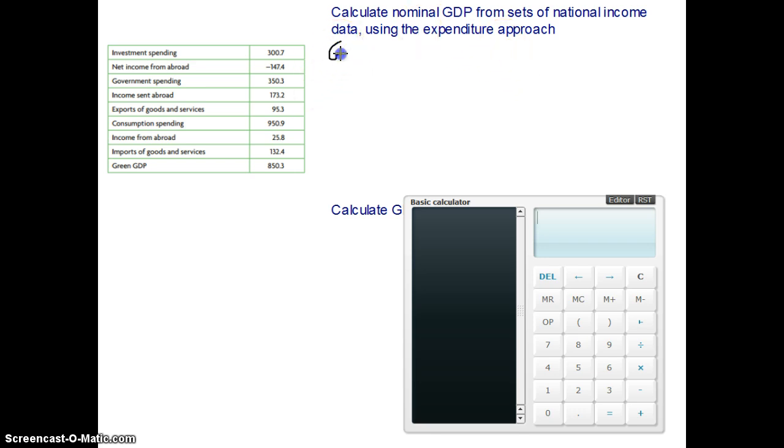So the expenditure approach of working out GDP equals consumption spending, everything we spend on consumption, plus everything we spend on investment, plus everything the government spends, plus everything we spend on exports minus what we spend on imports.